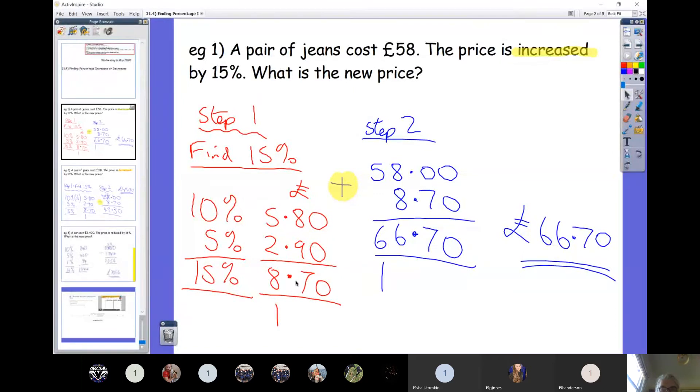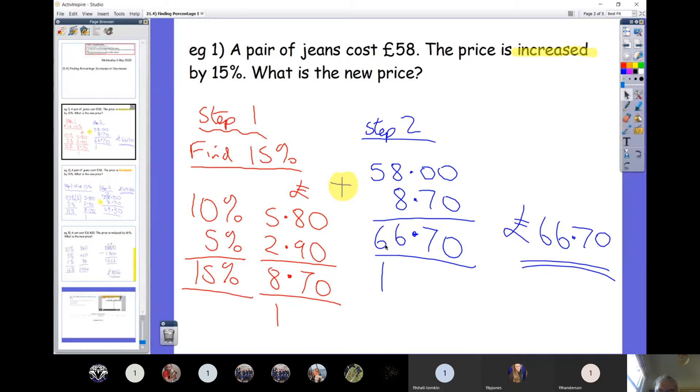That's exactly what we did last lesson. So the only extra step now is just to read the question carefully and either increase or decrease the original amount. The pair of jeans originally cost £58. We've increased them by 15%, so we've increased them by £8.70. So our new price is going to be £58 add £8.70, which is £66.70. The blue bit is the extra step for today.